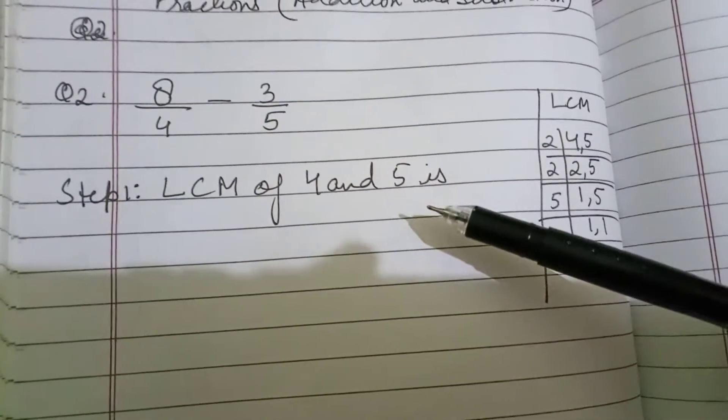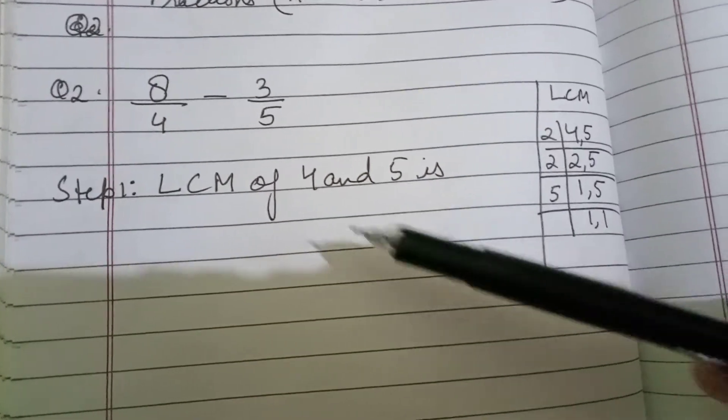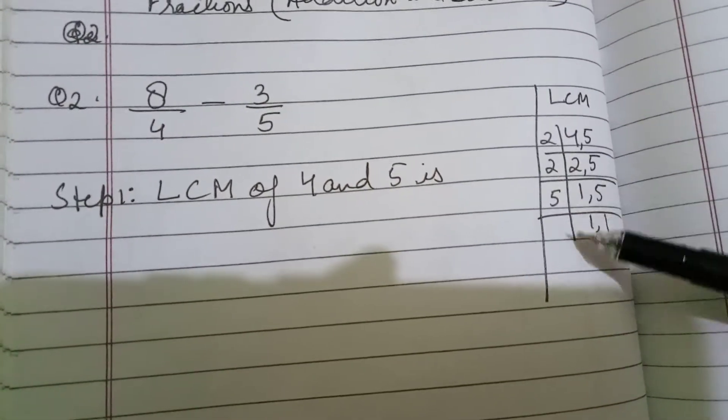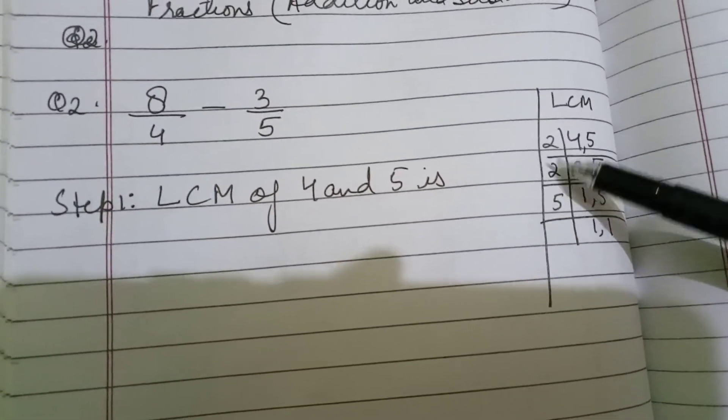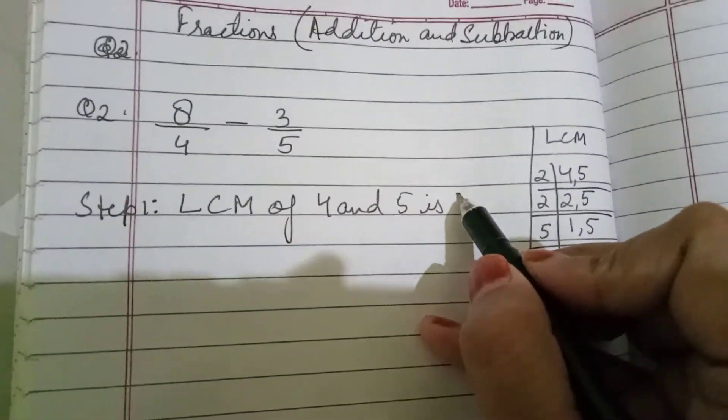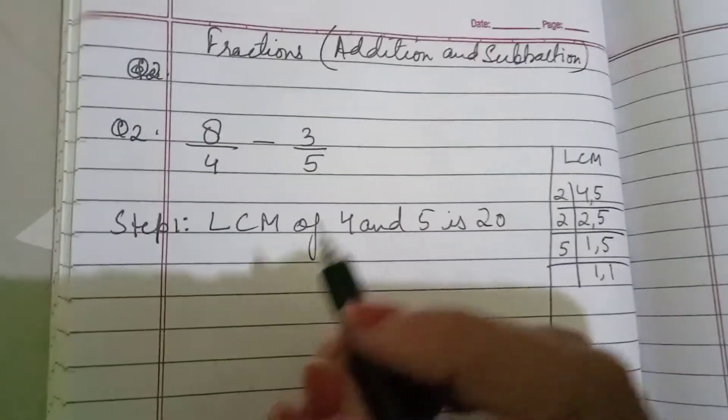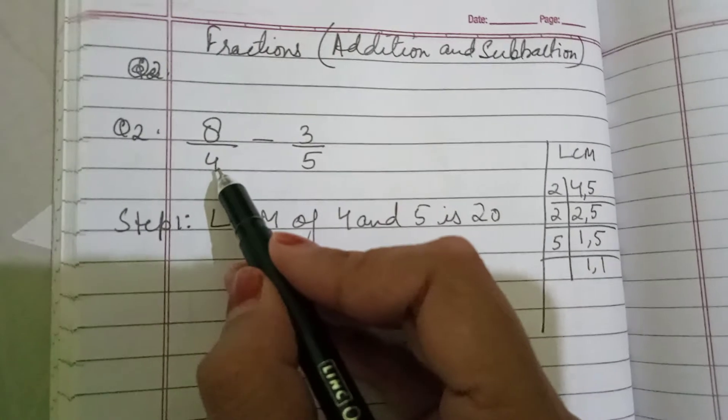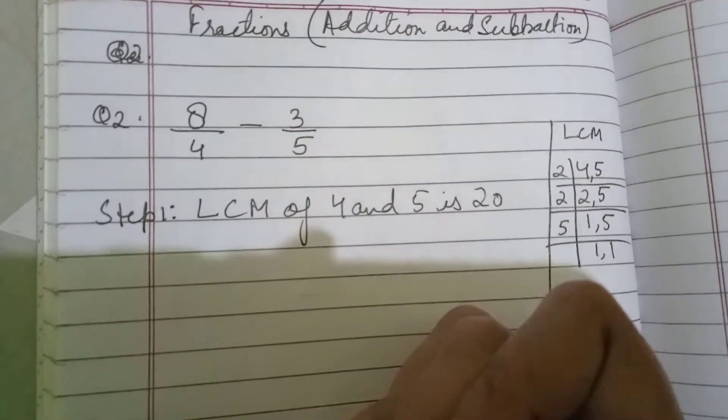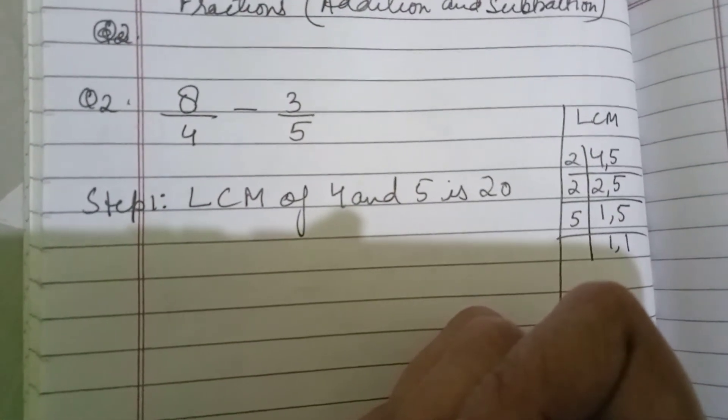First, we will take out step number 1, take out the LCM. So, LCM of 4 and 5 will be, 5 twos are 10, 10 twos are 20. So 20. How many times you will multiply 4 to get the answer as 20? 5 times.